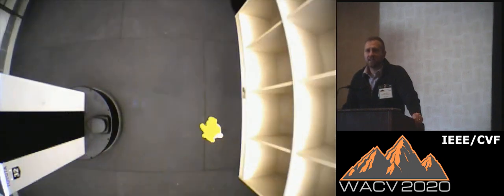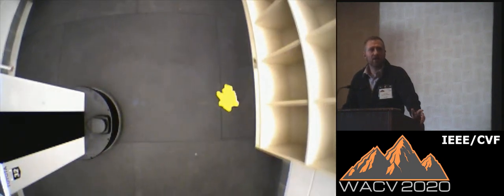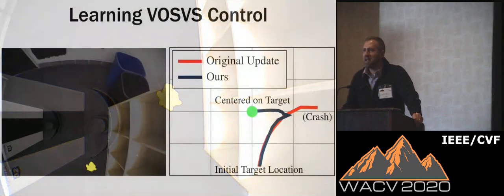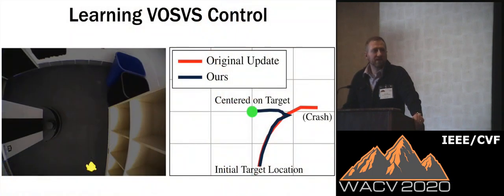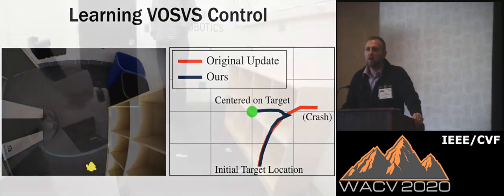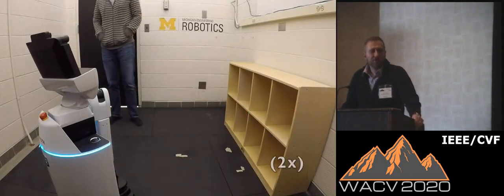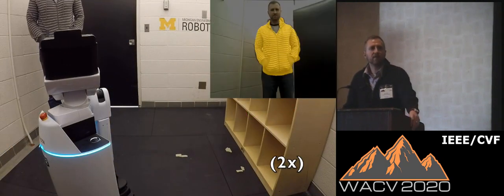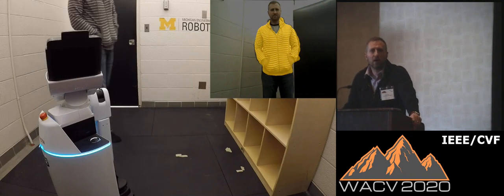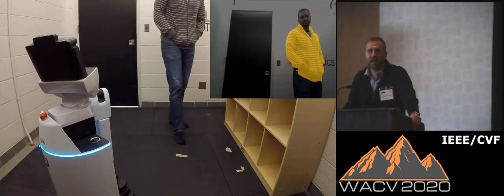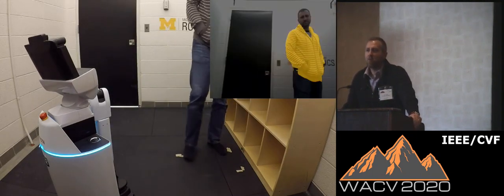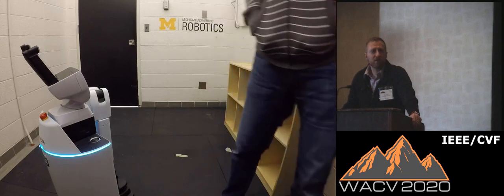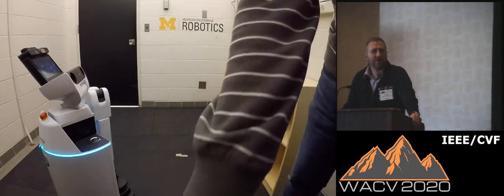In this example, you see our robot learning to center on the segmented object within 14 time steps. As a comparison, when we use the original update, the robot crashes backward into the wall. Using our update formulation, we successfully learned seven different visual servo control policies across seven actuators and two cameras, and one unexpected consequence was that we were able to track dynamic objects.